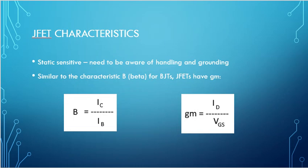Some more JFET characteristics: they're static sensitive. You need to be aware of handling and grounding. They're extremely sensitive to static. You can pick one up and it's gone. Pick up a circuit board with a JFET and you got some static in you, it'll blow it. Always make sure you're properly grounded. They have similar characteristics to beta for a BJT. JFETs have conductance. Beta equals collector current over base current.